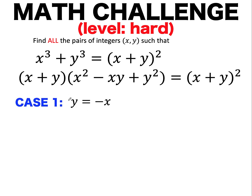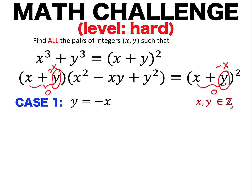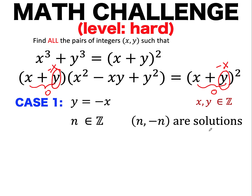The first case is when y is equal to negative x. If we replace y with negative x, then x plus negative x equals zero, and x plus negative x on the right side is also equal to zero. So zero times any number is zero on the left side, and the right side is zero — which is an equality. Therefore, if y equals negative x where x and y are integers, we have infinite solutions. If we call those numbers n and its additive inverse, then the ordered pair (n, -n) are solutions to the first case.